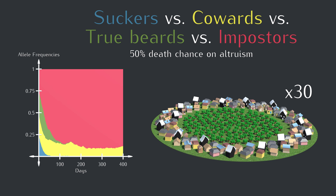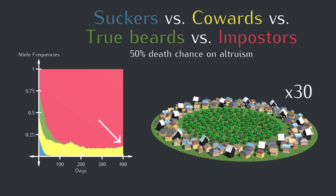What happened? The altruism allele gets eliminated pretty quickly, whether it's paired with a green beard or not. The first to go are the suckers — they help, but they never get help. The true beards do alright at the very beginning, just like before, but they end up going extinct because they sacrifice themselves for the impostors. And the more impostors there are, the more a true beard is in danger. Then there are the cowards that just mind their own business. Once the altruism allele is gone, there's really no difference between the impostor and the coward, so their relative frequencies just bounce around randomly.